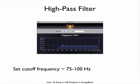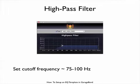First, we're going to set up an AU High-Pass Filter Effect plug-in. This filter has a downward slope of about 12 dB per octave, and I'm going to set the filter cutoff frequency at around 75 to 100 Hz. Note that I've saved my preferred setting as a preset with a memorable label.